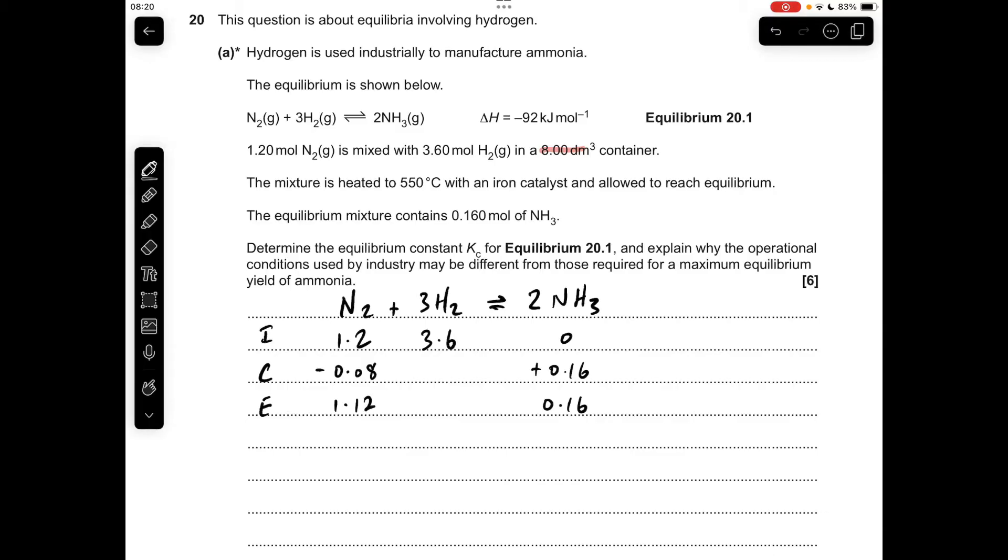For the hydrogen, if you look at the ratio, it's 1 to 3 for nitrogen to hydrogen, so that's going to drop by 3 times 0.08, which is 0.24 moles. That means at equilibrium there's going to be 3.36 left.